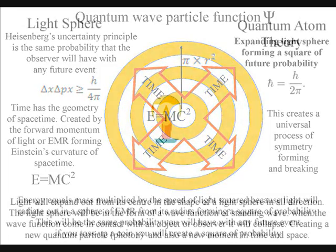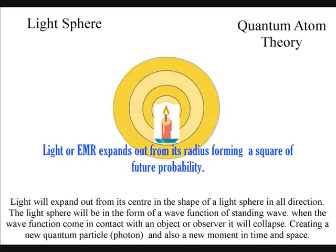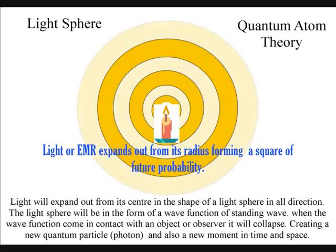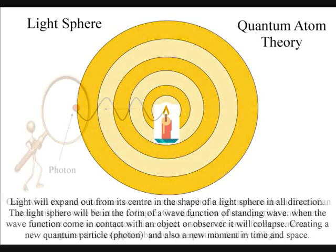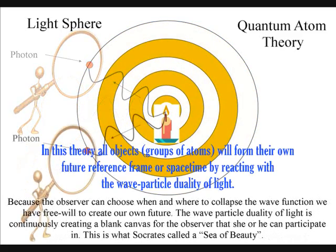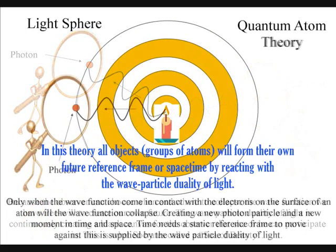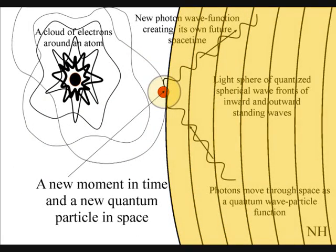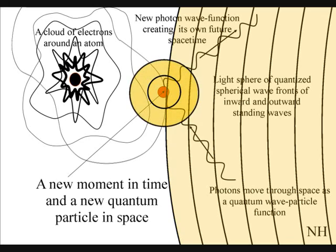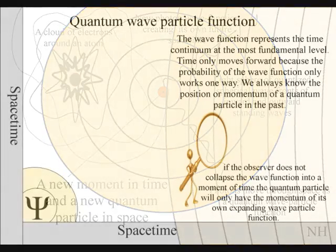We live in a dynamically evolving universe of continuous change because of the probabilistic nature of the wave-particle duality of light. Only if light waves come in contact with an object will they form new photons of quantized energy that will have a unique position in space and time. In this theory, it is the inward absorption and outward emission of electromagnetic waves that continuously form the arrow of time and the geometry of spacetime.